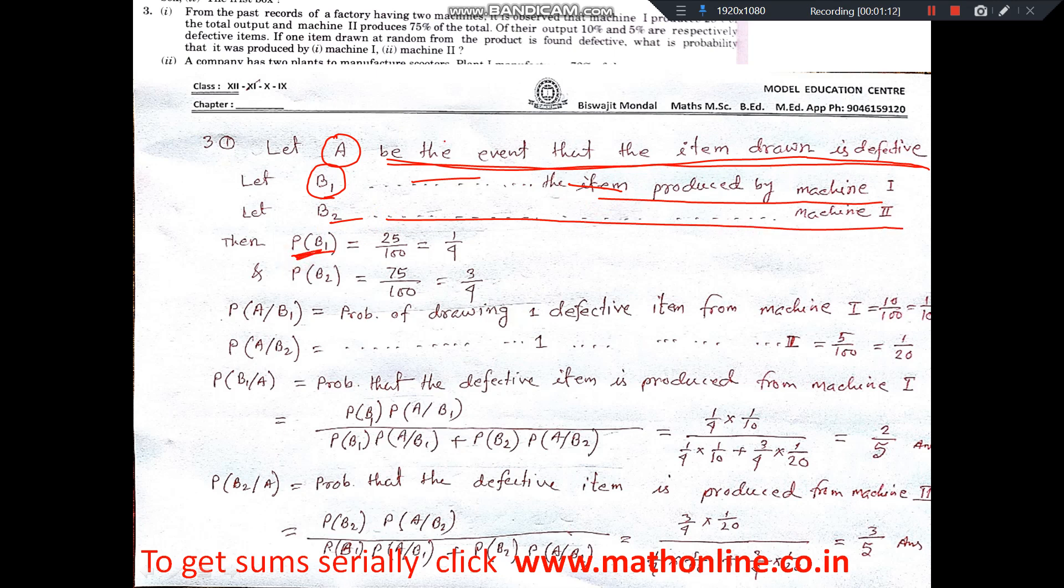In the question, it is stated that 25% is produced by machine 1. So the probability is 25 by 100, that is 1 by 4. And machine 2 produced 75%, so its probability is 75 by 100, which equals 3 by 4.